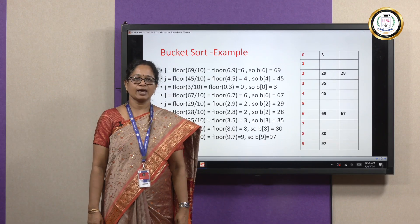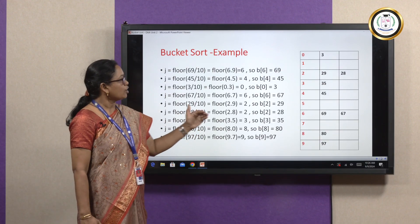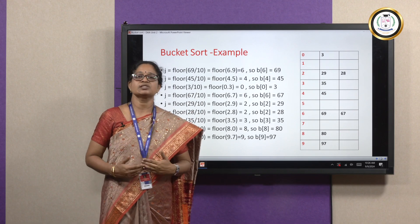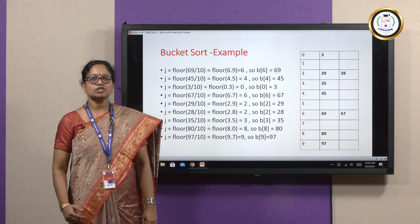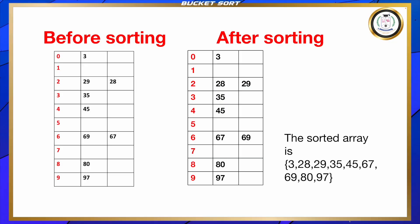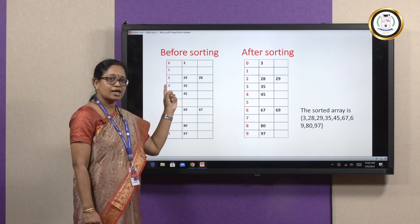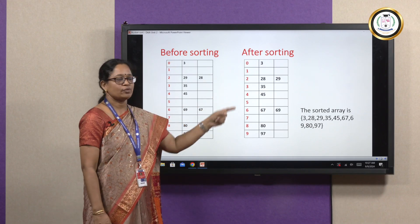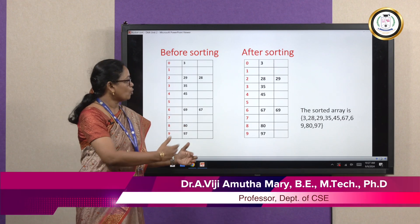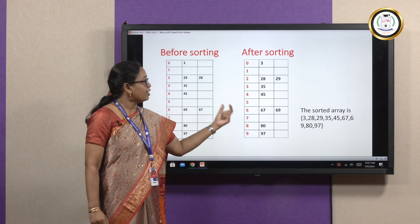In some buckets there are more than one value. The next step is to sort each and every bucket. Before sorting, you can see bucket number 2 had values 29 and 28; after sorting it becomes 28 and 29. Similarly, bucket number 6 had values 69 followed by 67; after sorting it becomes 67 followed by 69. Now we have an array with every bucket sorted.